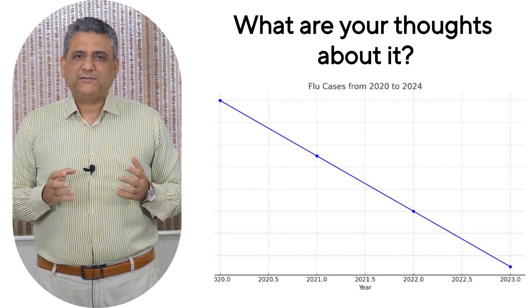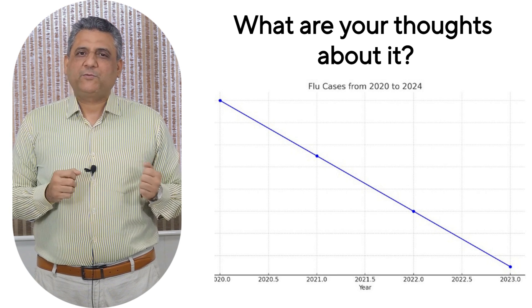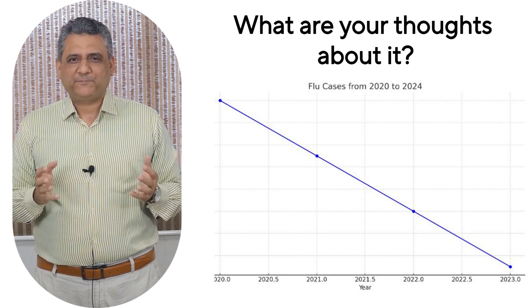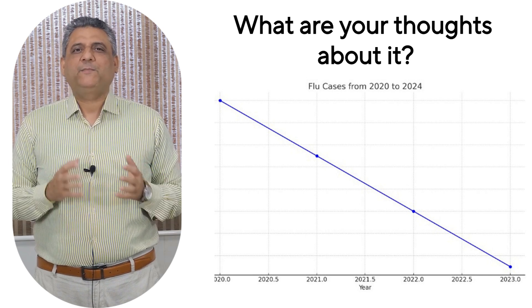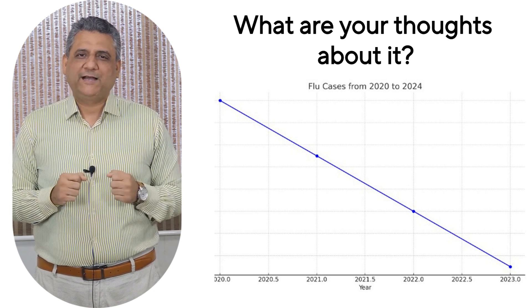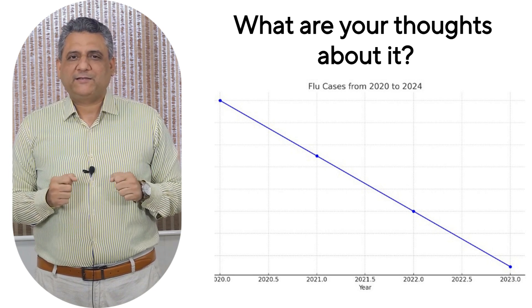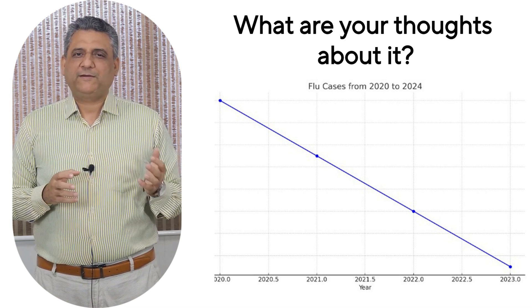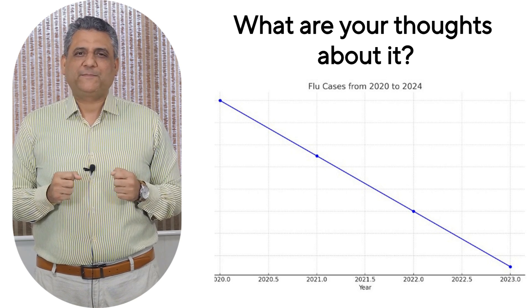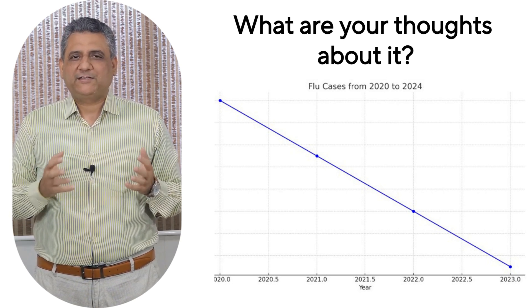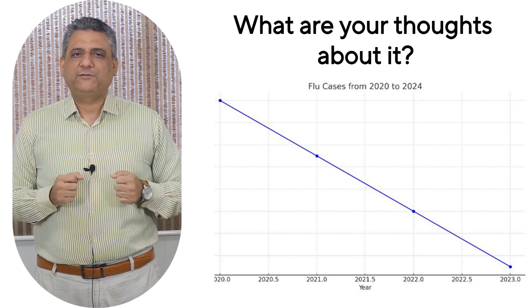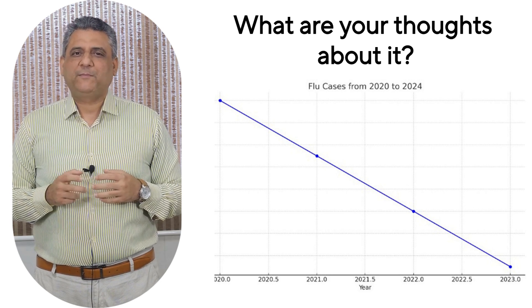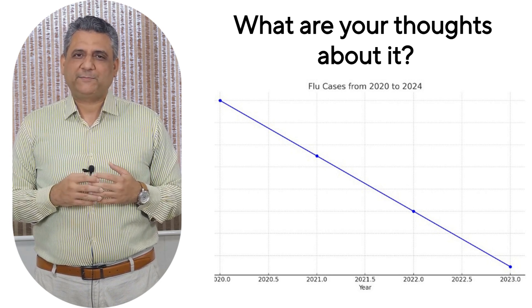Take a close look at this trend. We're looking at flu cases from 2020 to 2024. What's the first thing that stands out to you? Why do you think the number of flu cases has been steadily declining? Could there be any major events during this period that might explain this trend? Do you think this drop reflects an actual decrease in flu infections, or could it be due to reporting bias, testing changes, or health system disruptions? And finally, if this trend continues, what could it tell us about population immunity or surveillance in the post-pandemic years?